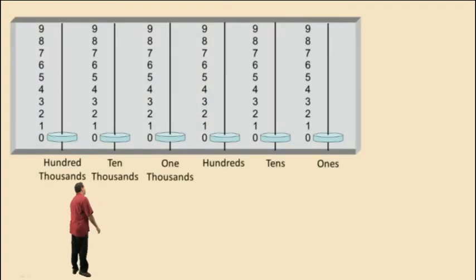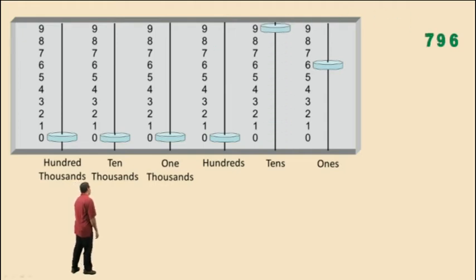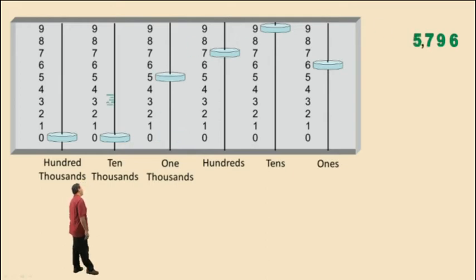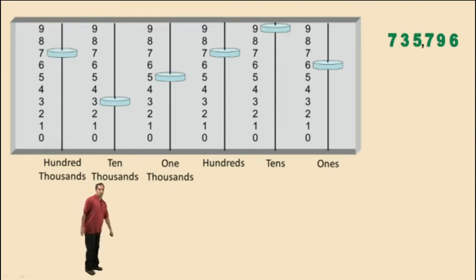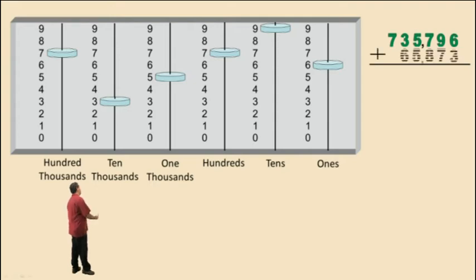Now let's look at a problem where carryover does occur. Let's enter six 1s, nine 10s, seven 100s, five 1,000s, three 10,000s, and seven 100,000s. Now to this number, let's go ahead and add 65,873.